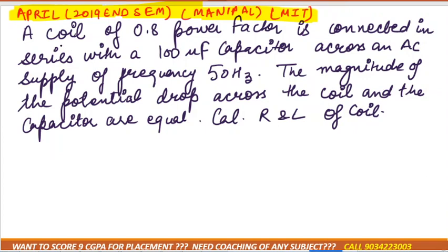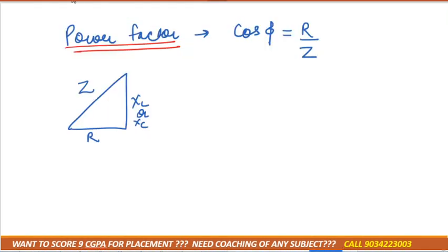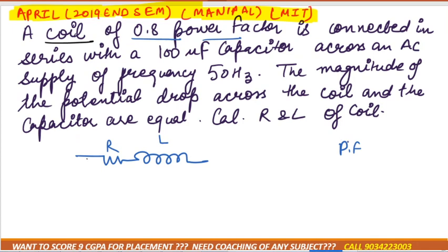In this question they said coil. Coil means there is a combination of R and L. Coil of 0.8 power factor means we are having power factor. Power factor is denoted by cos phi and cos phi is R by Z. So power factor is equal to cos phi, and since they are asking about the coil only, we will take RL.